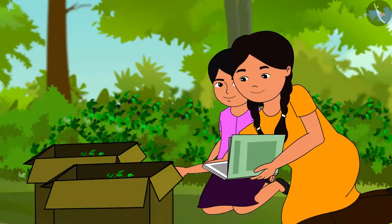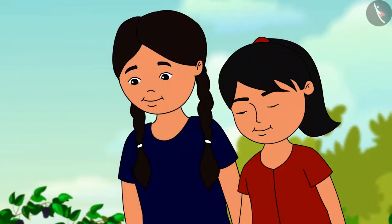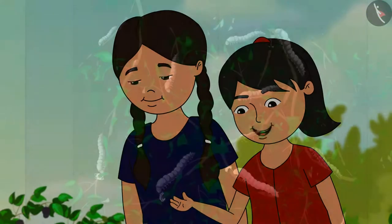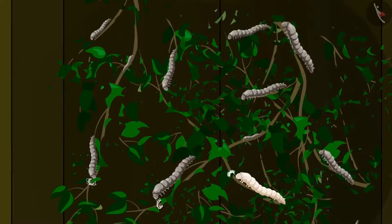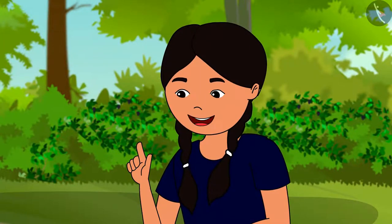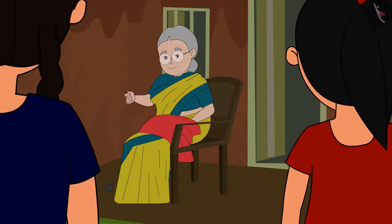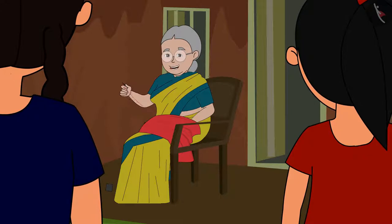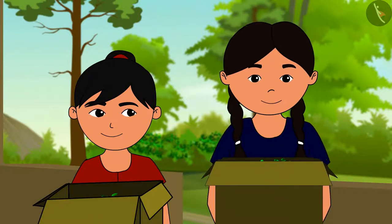Both sisters carefully observe Maya's box every now and then. After one week, Reena excitedly calls out: 'Didi, look! These caterpillars are spinning their heads and releasing a thread-like thing!' Didi agrees it is amazing. They ask grandma, who explains that the caterpillars are making a cocoon around themselves, moving their head in the shape of the number eight. Reena asks: 'Is this thread-like thing silk?'